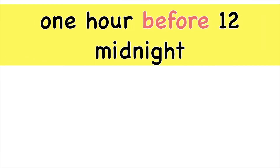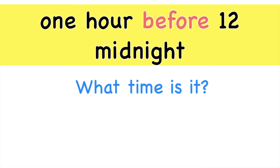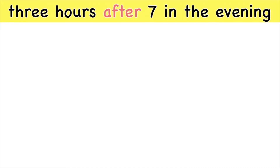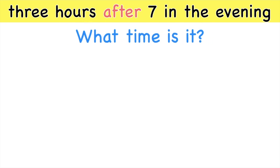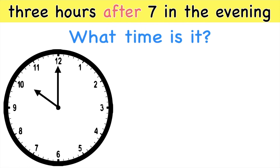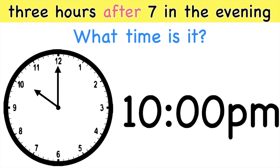How about this one? 1 hour before 12 midnight. What time is it? Good job, children. It's 11 o'clock p.m. How about this one? 3 hours after 7 in the evening. What time is it? This is your 7 o'clock, 3 hours after. Let's count: 1, 2, 3. What time is it? It's 10 o'clock p.m.